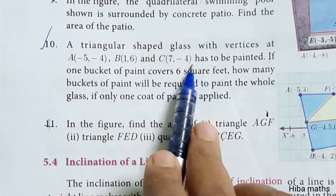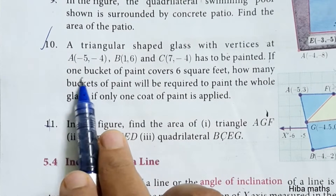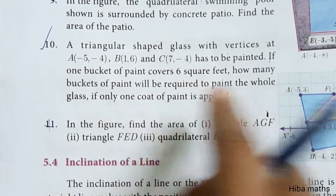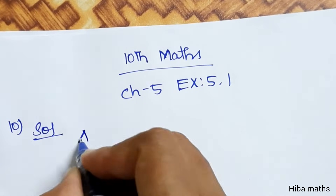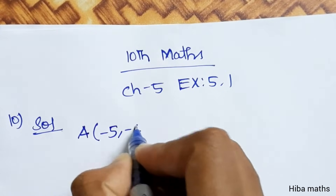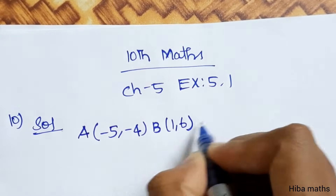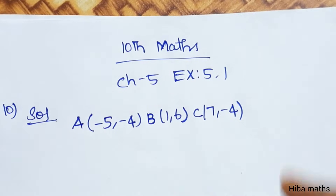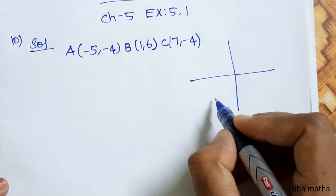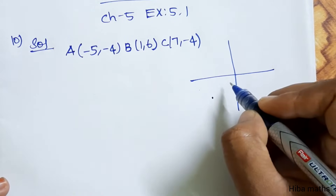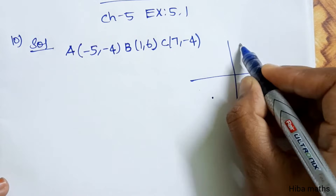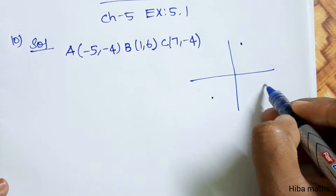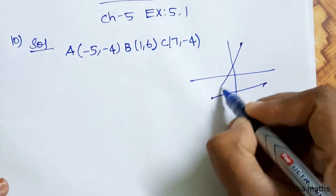The triangular shaped glass has dimensions with vertices A, B, and C. We need to paint the whole glass. One bucket of paint covers 6 square units. The coordinates are: A is (-5, -4), B is (-6), and C is (-7, -4). We will divide the area using these A, B, C values.